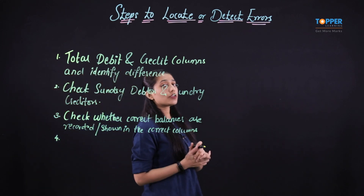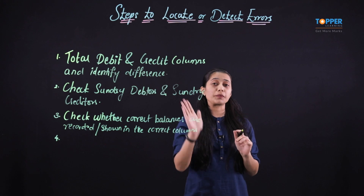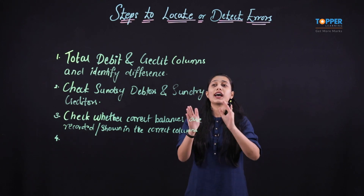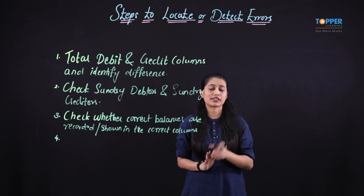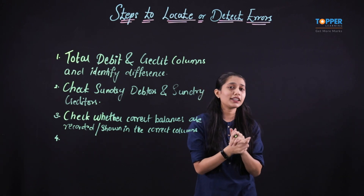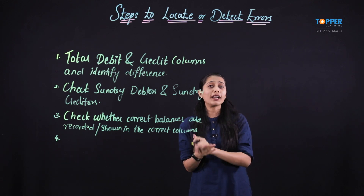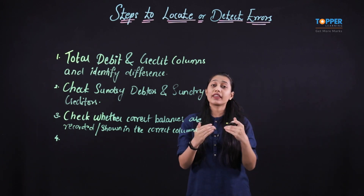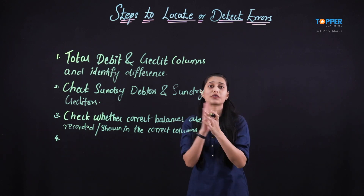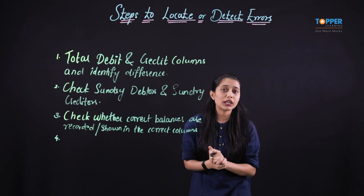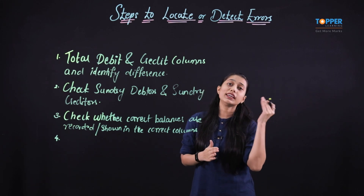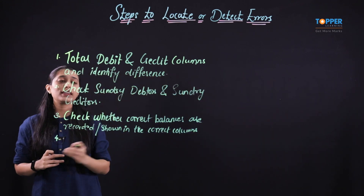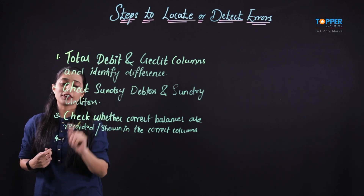Once this is done, consider the amount of difference between the debit column and the credit column and check if any of the account balances had a balance equal to that particular difference. For example, if the difference in the debit and credit column is rupees 5000, go back to the balances and check if any of the accounts had a balance of rupees 5000. If that is the case, there is a possibility that that particular account was not recorded in the trial balance, or maybe it was considered twice or recorded in the wrong column. So that becomes the fourth important step: follow the trial and error technique with the difference between the debit and the credit columns.